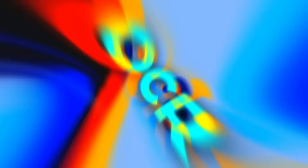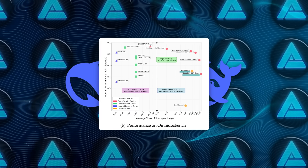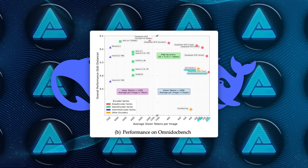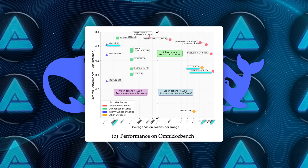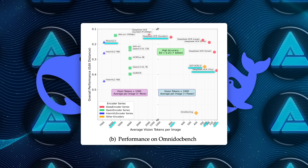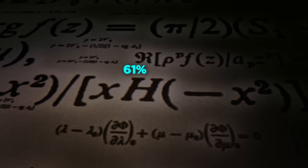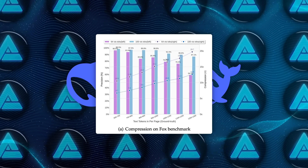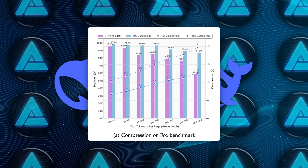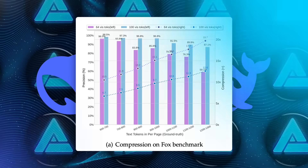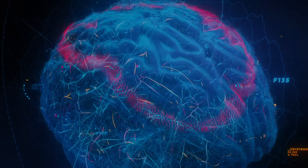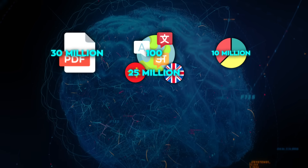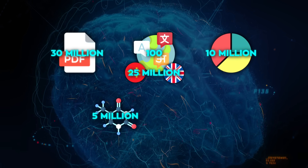Benchmarks are where this stops being just a vibe. On OmniDoc Bench, DeepSeek OCR beats GOT OCR 2.0, which needs roughly 256 tokens per page, while DeepSeek hits the same task around 100 vision tokens. MinerU 2.0 often climbs past 6,000 tokens per page for dense docs; DeepSeek stays under 800 for comparable complexity. That's roughly 61% fewer tokens than GOT, and roughly 87% fewer than MinerU in the scenarios they published. There's also the FOX benchmark focused on dense PDFs, with strong results for labs dealing with equations, diagrams, and layout chaos. Training data spans roughly 30 million PDF pages across about 100 languages, with around 25 million in Chinese and English, plus about 10 million synthetic diagrams, 5 million chemical formulae, and 1 million geometric figures.